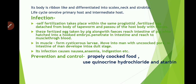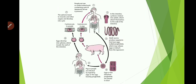Prevention and control: use properly cooked food and use quinacrine hydrochloride and atabrine to control the disease. This is the diagrammatic representation of the infection of Taenia solium in man and the pig.